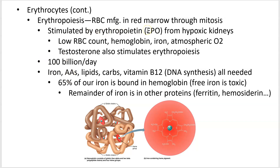A hormone that stimulates erythropoiesis — erythropoiesis is the manufacture of red blood cells — is erythropoietin, which we learned about in the last chapter. Your kidneys release erythropoietin, and what stimulates them to release it? A low red blood cell count, low hemoglobin, low iron, low atmospheric O2 — all those lead to low oxygen. Basically, if your tissues and kidneys aren't getting enough oxygen, they're going to release erythropoietin, which kicks red blood cell manufacturing into gear.